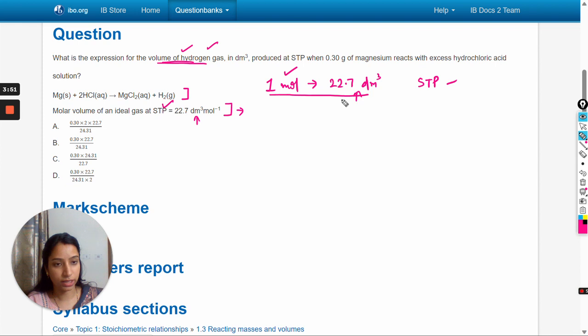In the reaction equation, the number of moles of hydrogen gas are equal to the number of moles of magnesium. But in the question, the amount of magnesium is given, so firstly we have to calculate the number of moles of magnesium, then we will calculate the volume of the hydrogen gas.